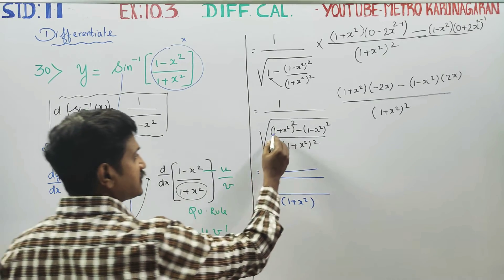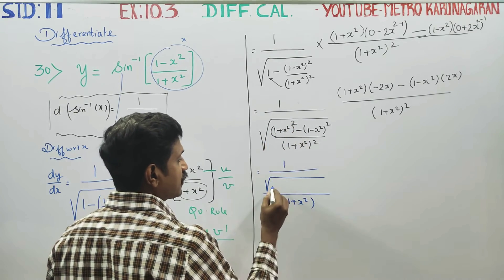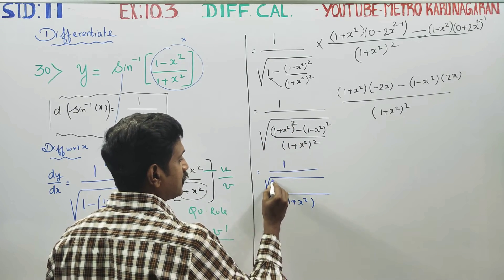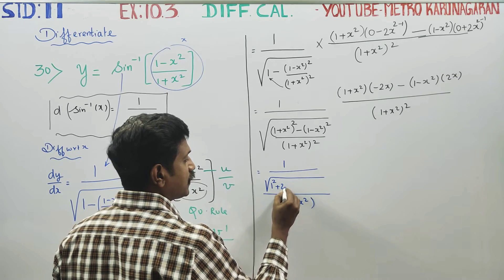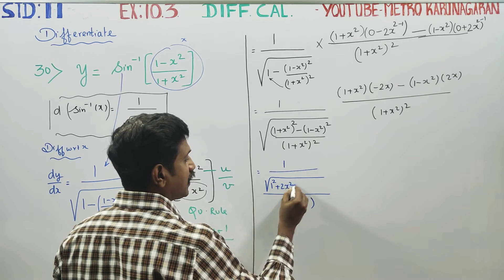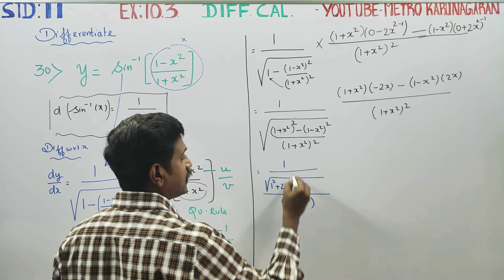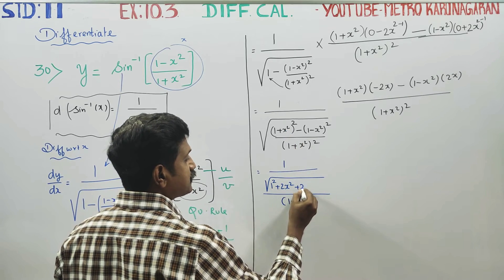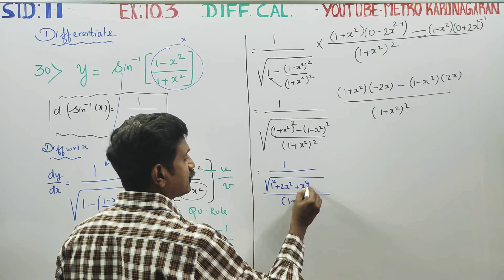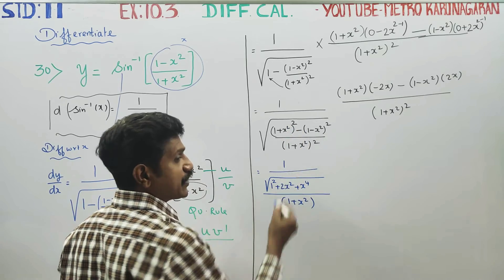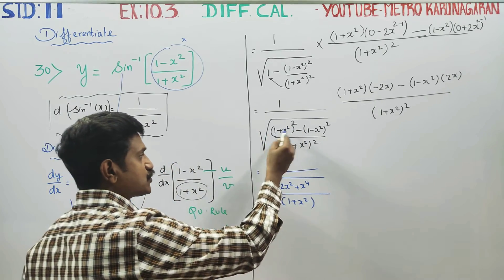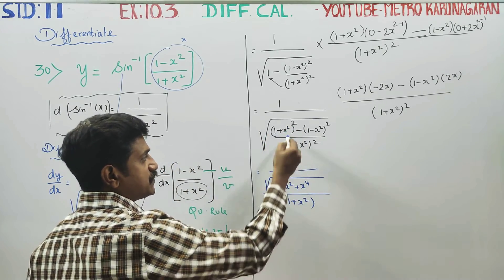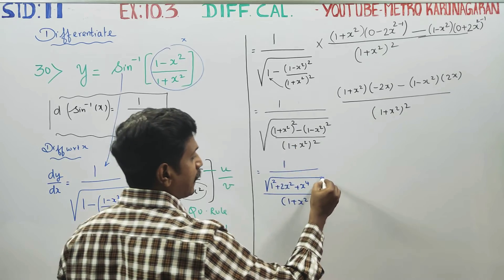Now, what is (a plus b) whole square formula? It is a square plus 2ab plus b square. Here b square means x square becomes x power 4. So we expand: a square plus 2ab plus b square.